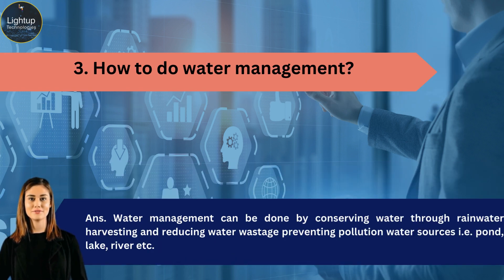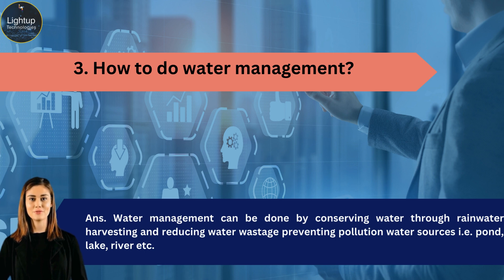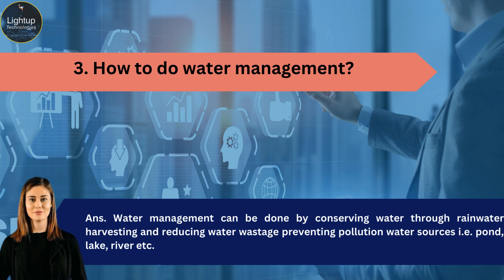How can water management be done? Water management can be done by conserving water through rainwater harvesting and reducing water wastage, and by preventing pollution of water sources such as ponds, lakes, and rivers.